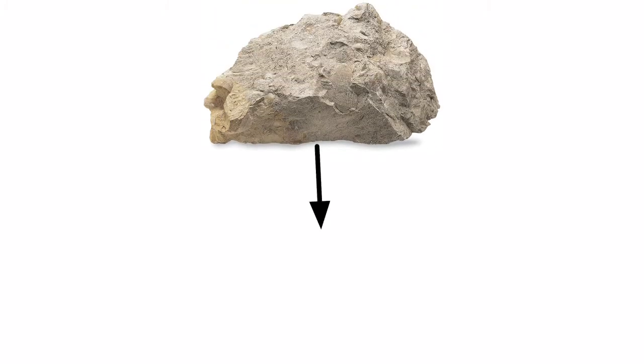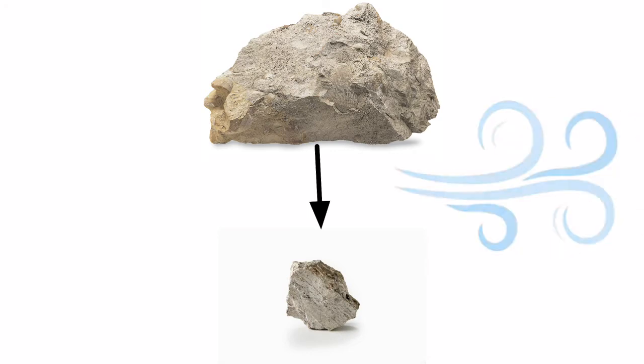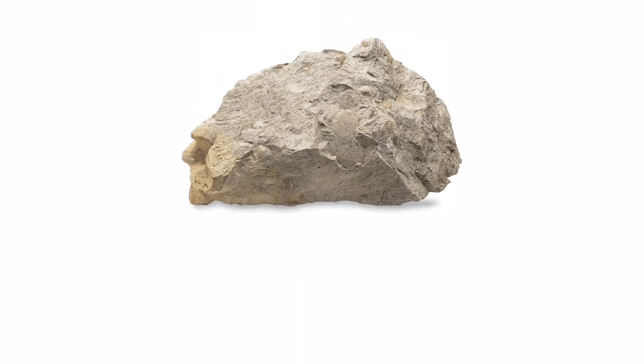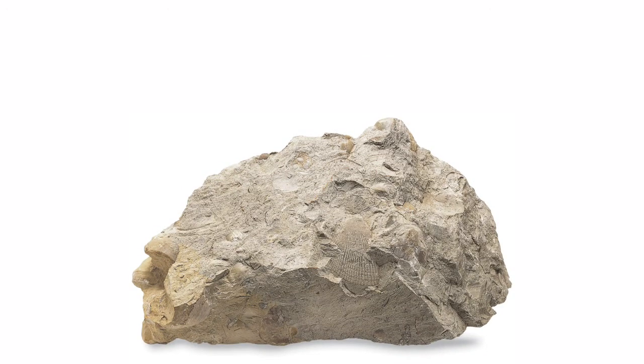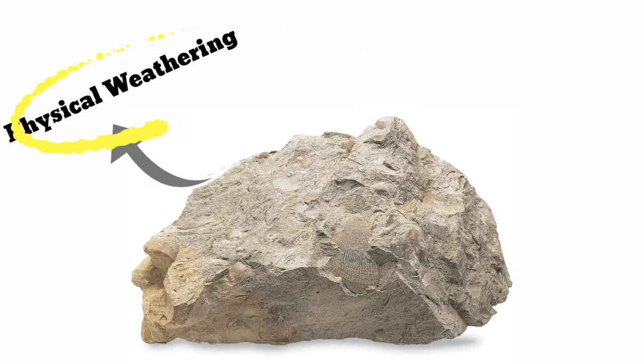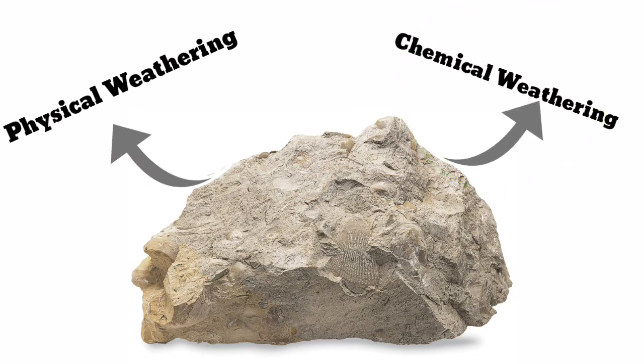Big rocks break down into smaller rocks by continuous action of wind and rain. It takes many years for these rocks to break down into smaller rocks. Rocks are mainly broken by two types of weathering: physical and chemical weathering.